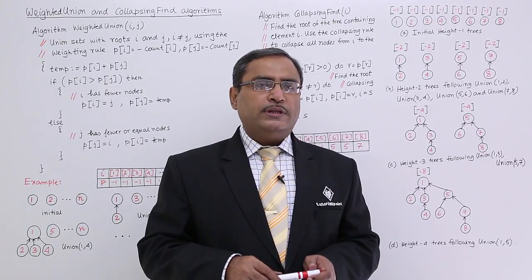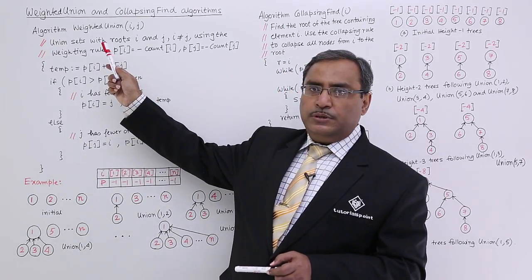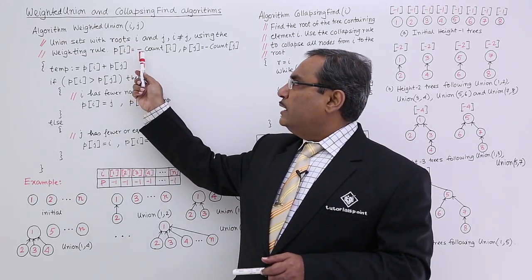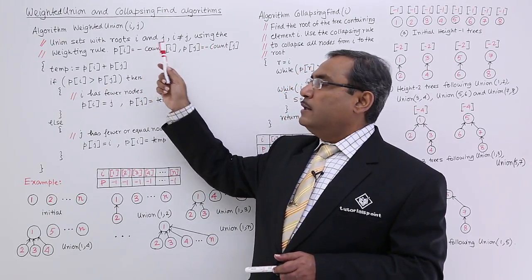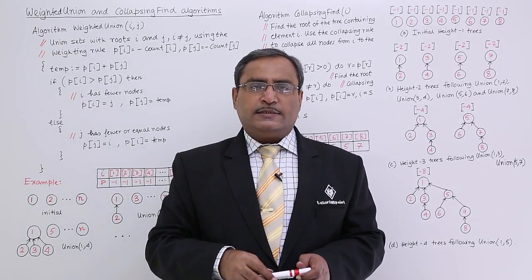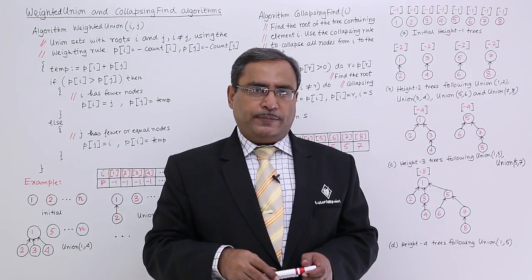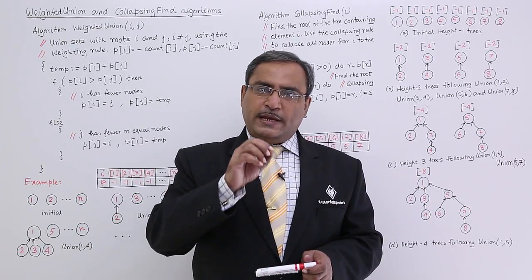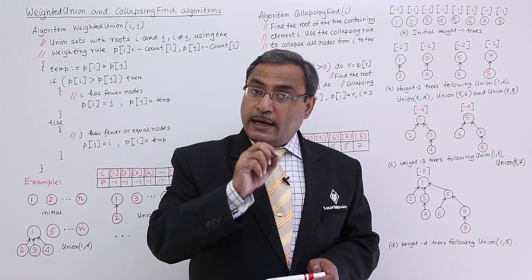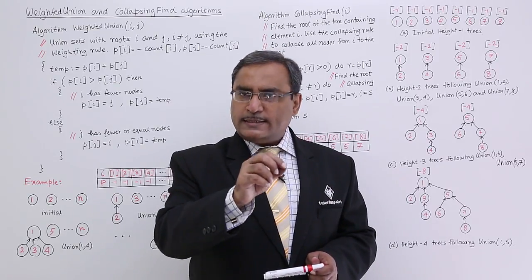Here we are going to resolve the problem with simple union and simple find. Simple union will be replaced by a new algorithm called weighted union. In weighted union we use count(i) and count(j). In our previous implementation, against the root nodes in the array representation we wrote minus 1, indicating a root node. But here we will utilize the same location with the same minus sign, but write not minus 1 — instead the number of nodes in that particular set.